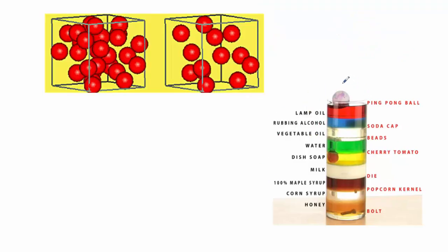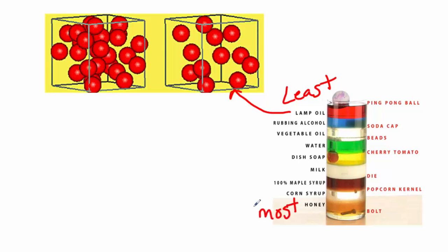This picture gives us a really good example of density. You can see that the lamp oil is floating on the very top of the column — it is the least dense, and its particles are very spread out, not very densely packed. On the bottom, we have honey, which is the most dense, with particles tightly packed together. We can see that the popcorn kernel is floating on top of the corn syrup, so it is less dense than the corn syrup, but more dense than the maple syrup, because it has sunk beneath it.